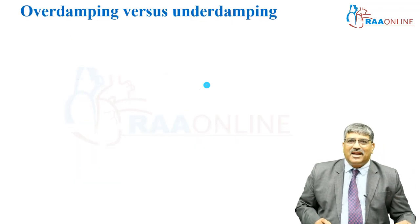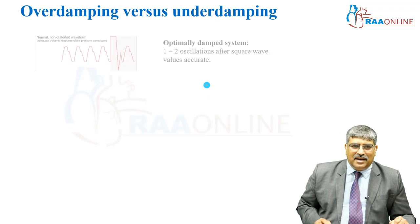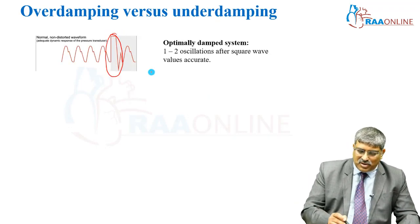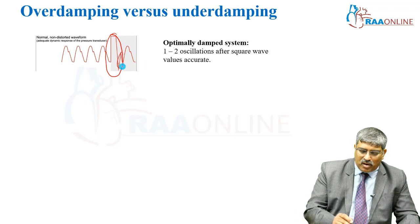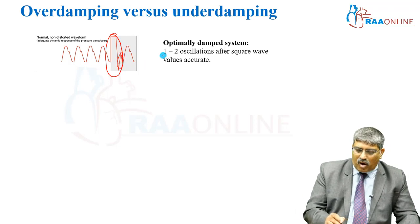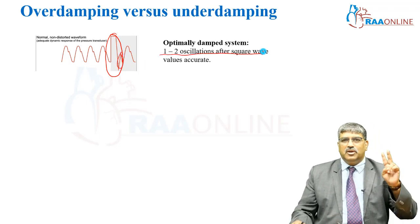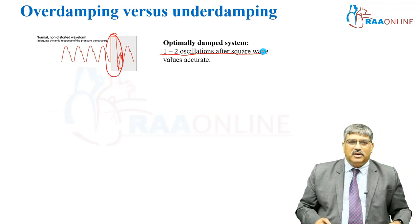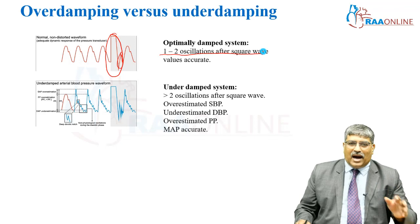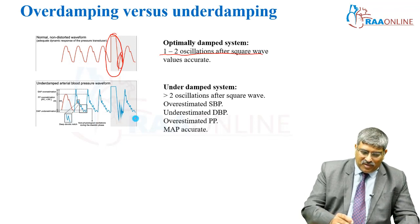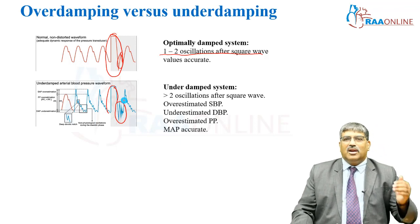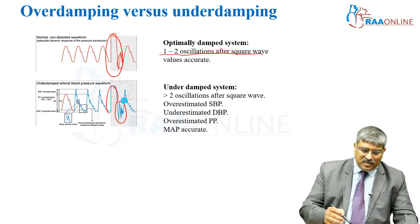Coming to over-damping and under-damping. Normally when you do a square wave test, you have 1 to 2 oscillations — this is the optimally damped system. In an under-damped system, when you do a square wave test, you will have more than 2 oscillations.